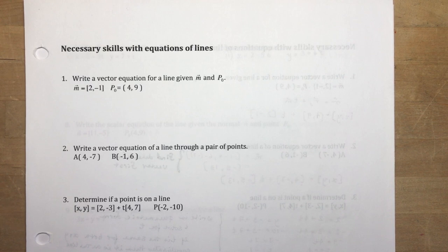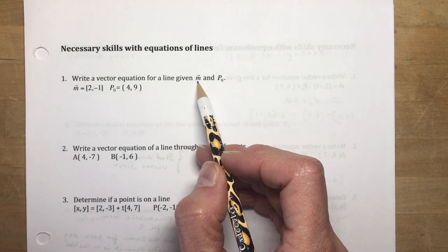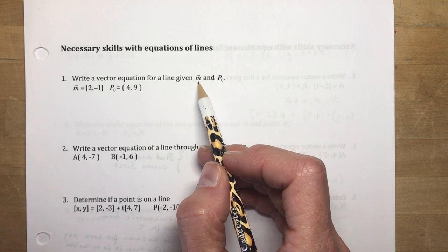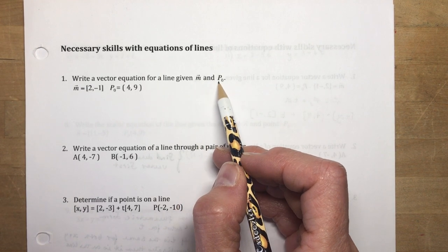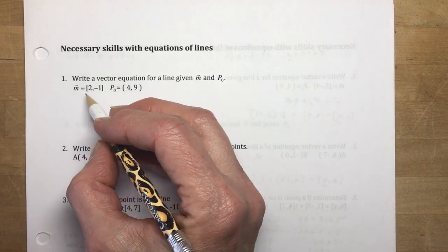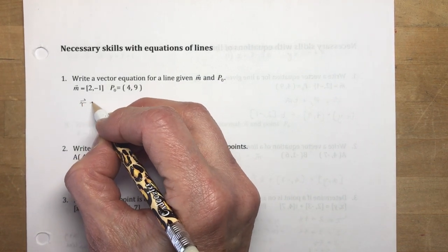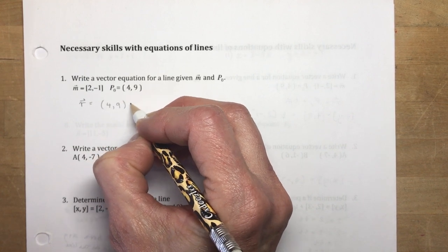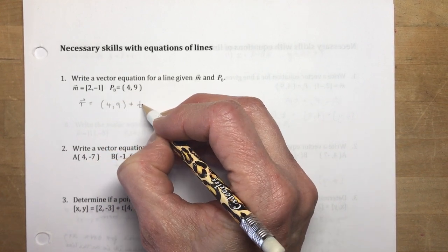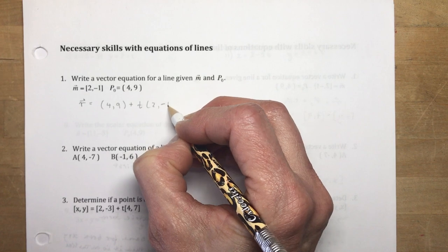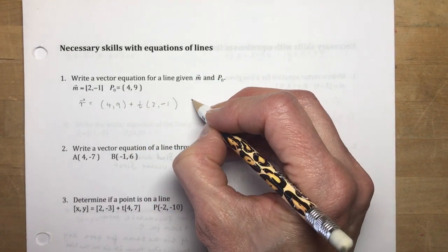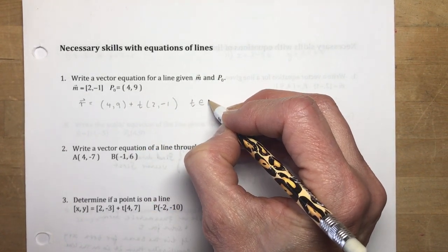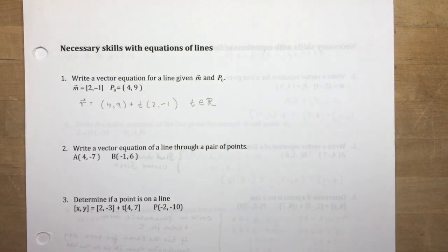Going over the basics from 8.1 and 8.2: write a vector equation for a line given the slope or the direction vector — which is the same thing — and the point P0. All you have to do is write the point and add some parameter T times the direction vector. Generally you should say T is an element of real numbers, although sometimes it's not stated.